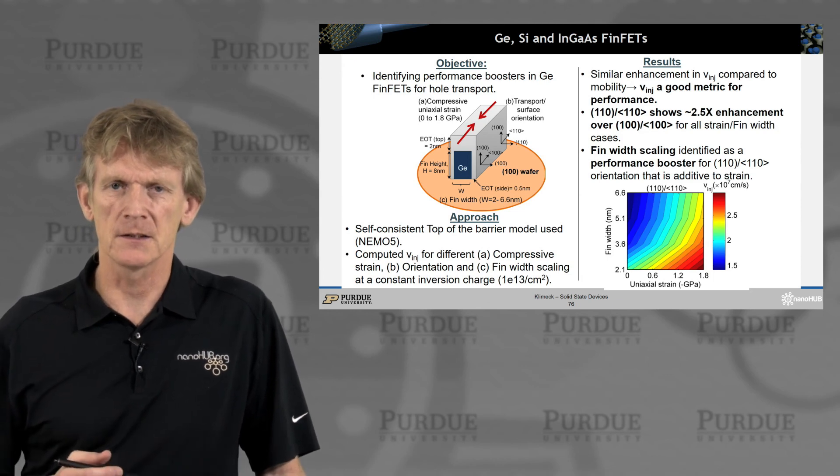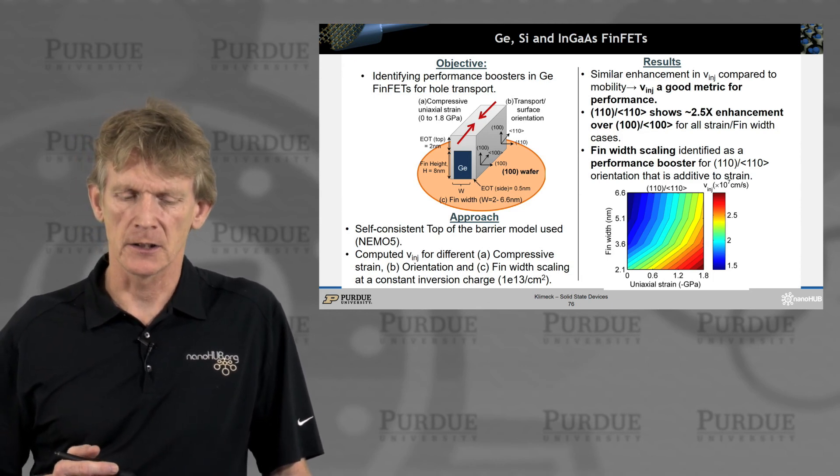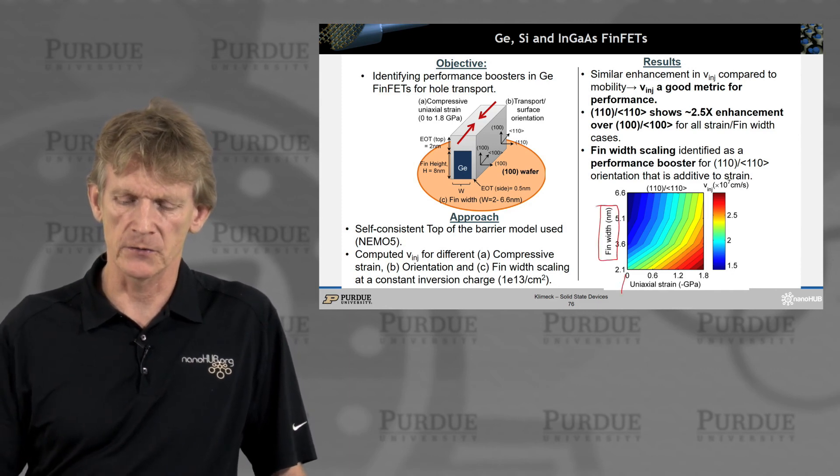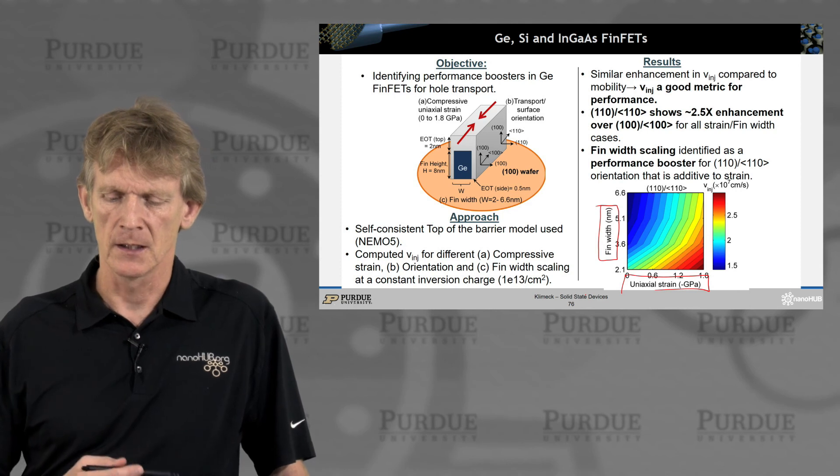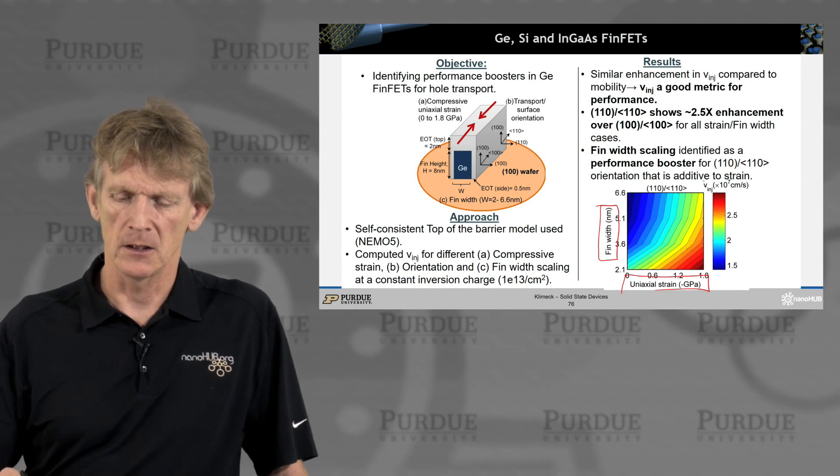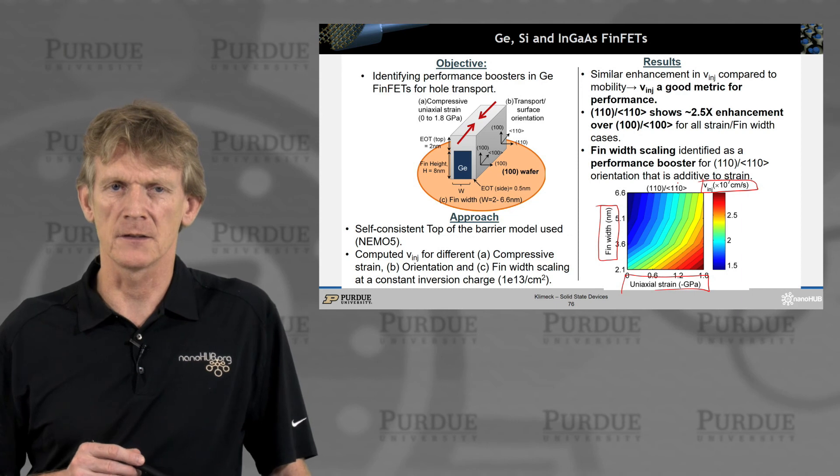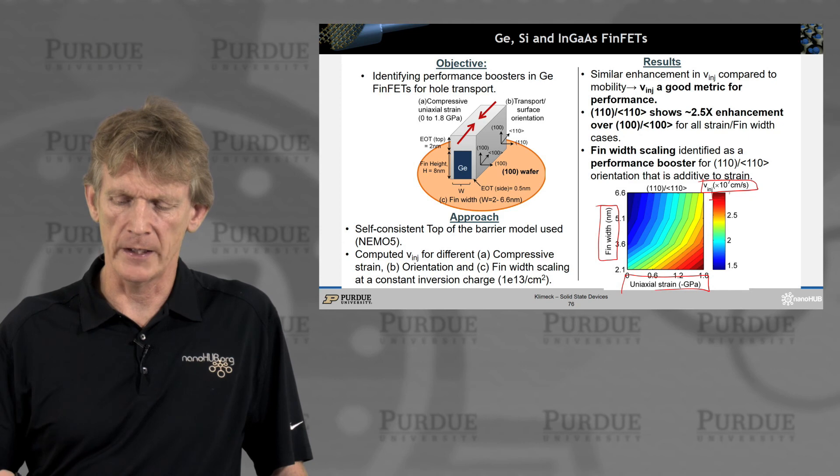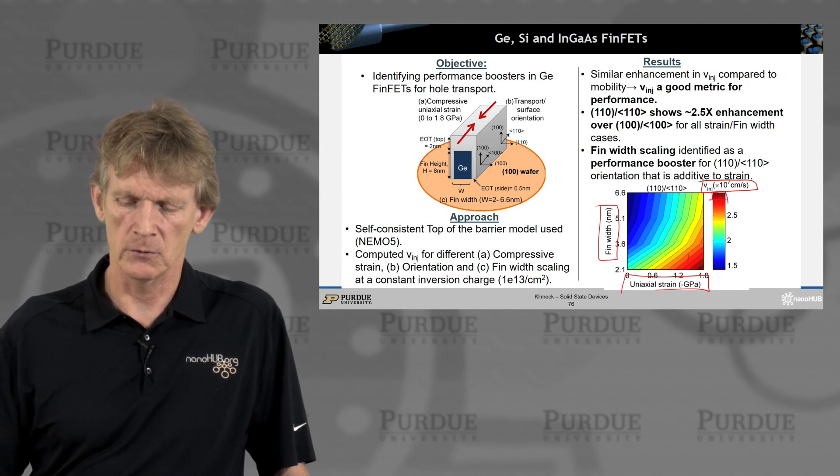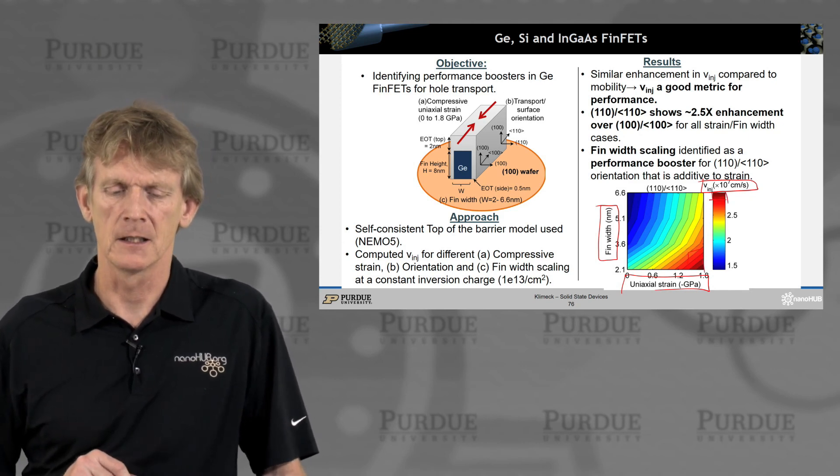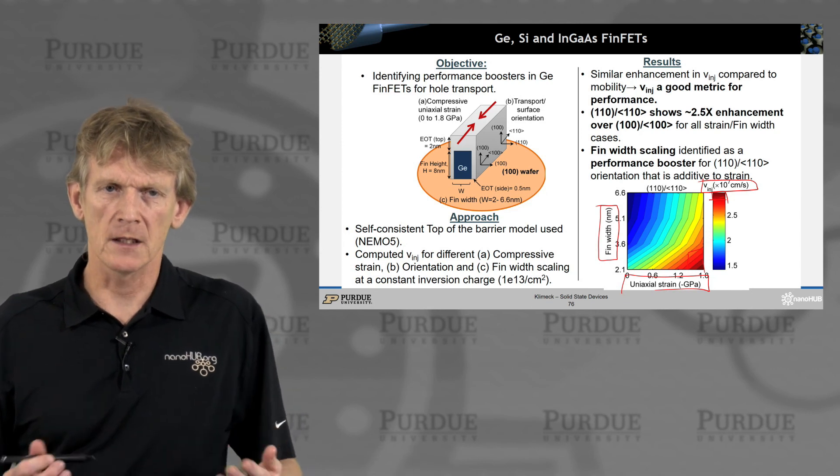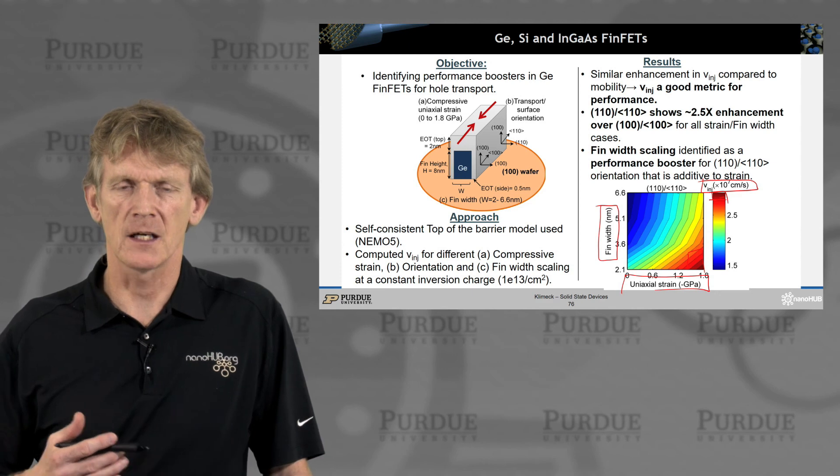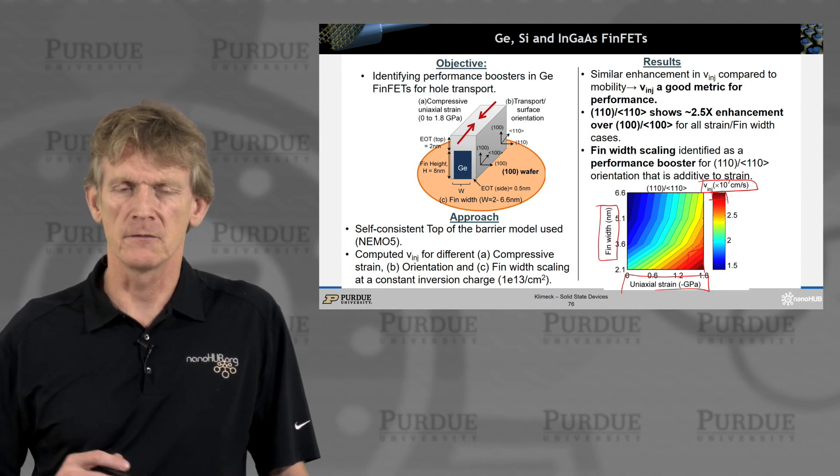So putting some of this together, this is sort of an eye chart. You can now have an exploration of exploring different fin widths versus different strains in the system, and find your sweet spot of maximizing the injection velocity of the carriers, which will give you the best current flow. And you'd like it to be red, so high velocity. So you would want to be down in this design regime. So with tools that are being developed, you can now begin to explore design spaces for those kind of devices.